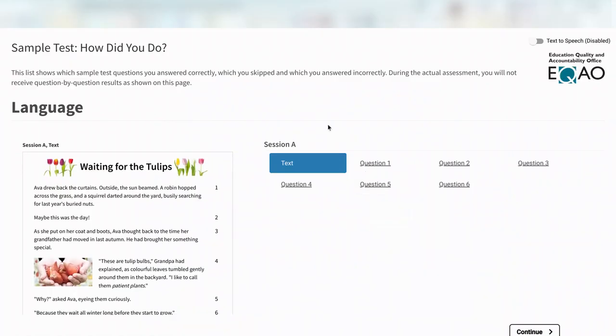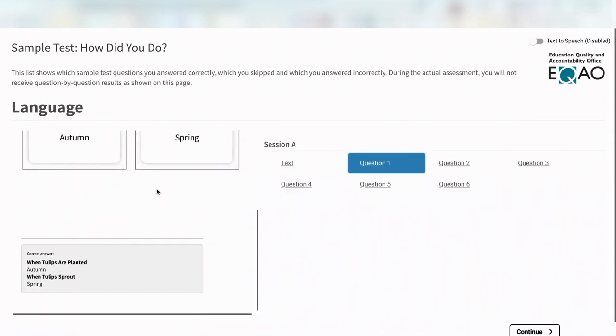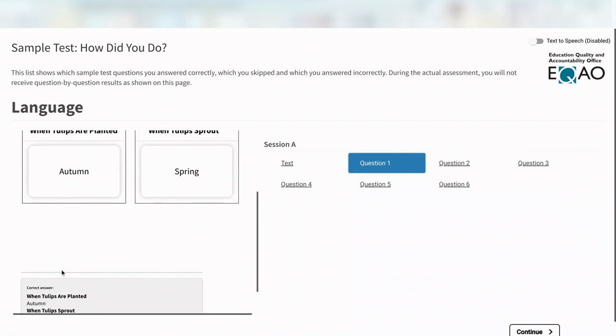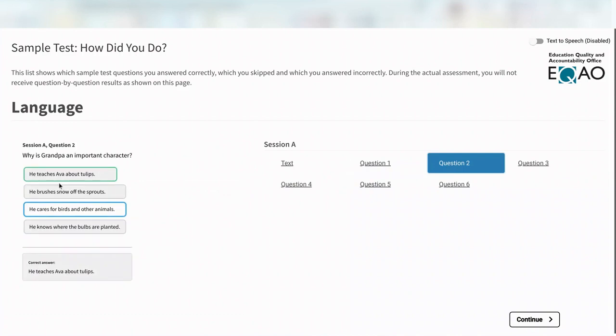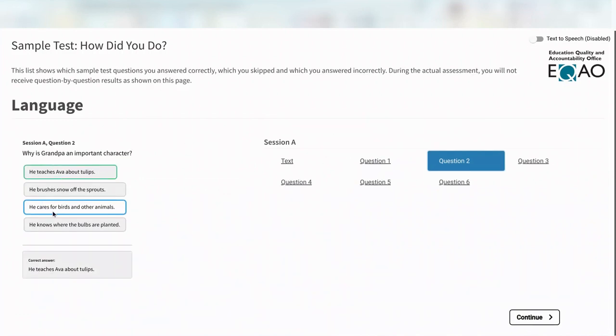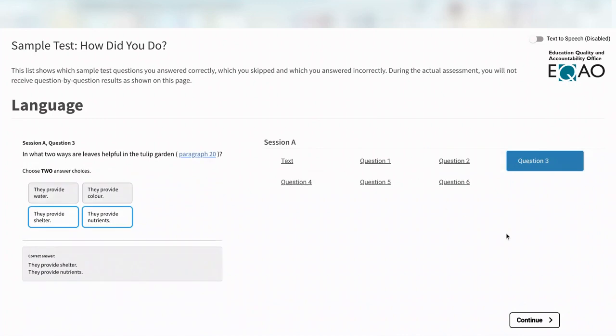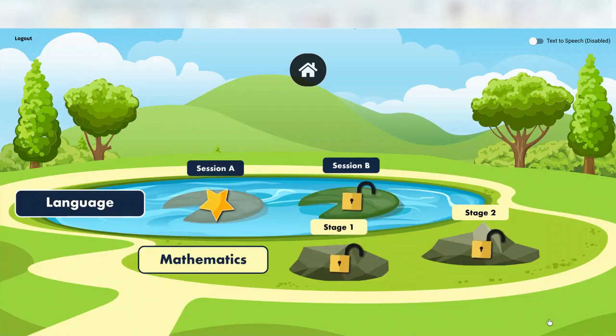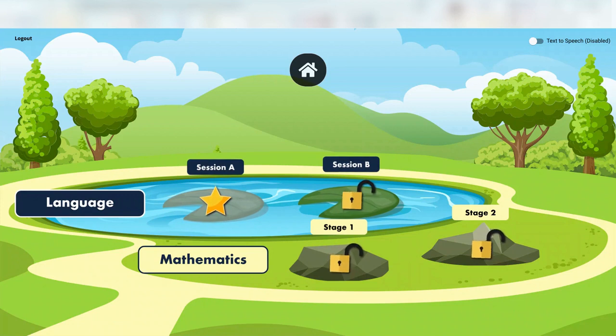So now what's great, you can see the list here that shows the test questions that you answered correctly, which ones you skipped and which ones you answered wrong. But also just remember during the actual EQAO test, you'll not receive these types of results. So if I click on question one, I can actually see at the bottom here, the correct answer is autumn and spring. And I can double check my answers. Oh, I can see for question two, I got that one wrong. I said he cares for birds, but really it was he teaches Ava about tulips. So you can actually go through and check how you did. I'm going to click on continue. Now, once I do that, and I click on that submit button on the real test, it's just going to bring you back to that lily pad. And a star is now going to be on the session that you just completed. Congratulations, you just completed your first session in language.